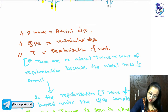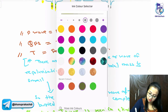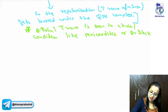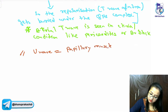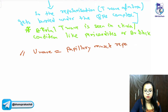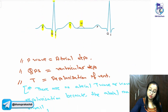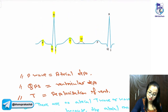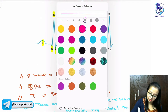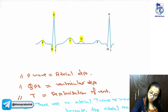The U wave is rarely seen. It signifies papillary muscle repolarization. Apart from waves, there are also segments and intervals in the ECG.